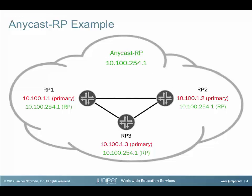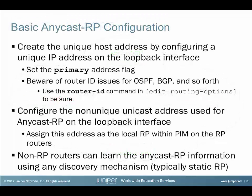Here we show three rendezvous points inside of a PIM sparse mode domain. We're using an Anycast RP address of 10.100.254.1, shared by all rendezvous points. Each RP also has its own unique address. Other routing functions would not work correctly because of duplicate router IDs, so each rendezvous point needs its own unique IP address so that its other protocols, such as IGP and BGP, function correctly. To ensure that the unique address is used as the primary address on the loopback interface, the primary keyword can be added to the address.